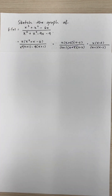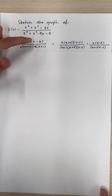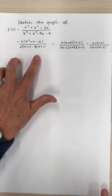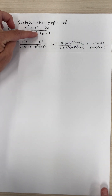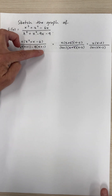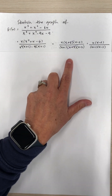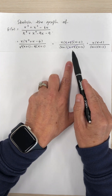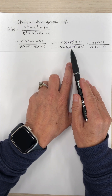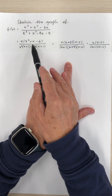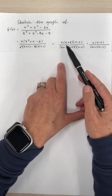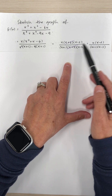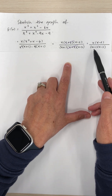In the first step we factor the numerator and the denominator. We take x out of the numerator to get x times (x squared plus x minus 6). We factor the denominator by grouping: x squared times (x plus 1) minus 9 times (x plus 1), giving (x plus 1)(x squared minus 9), which is (x plus 1)(x plus 3)(x minus 3). Then x squared plus x minus 6 factors as (x plus 3)(x minus 2). The (x plus 3) terms cancel, leaving x(x minus 2) divided by (x plus 1)(x minus 3).